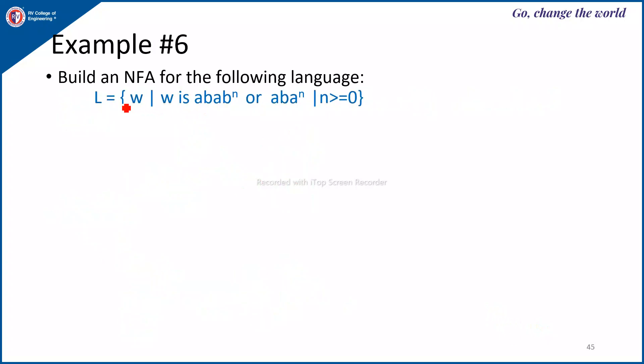Now, the next problem, L is equal to W such that W is ABAB raise to N or ABA raise to N, N greater than or equal to 0. It means minimum string is ABA or AB. For which you write a separate path machine from the same start state. If it is AB, use the above path. A, Q1, B, Q2, A, B. If it is ABA, directions are important, ABA, it should go to the final state, Q3 here. This is for the first language here, followed by any number of Bs. B could be 0 or more, so it should be a self loop.